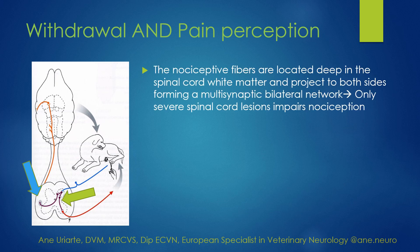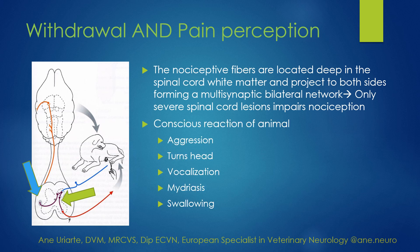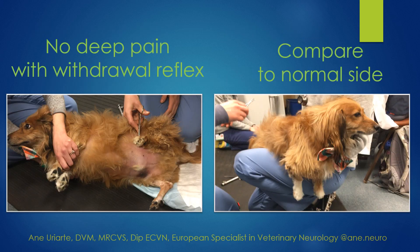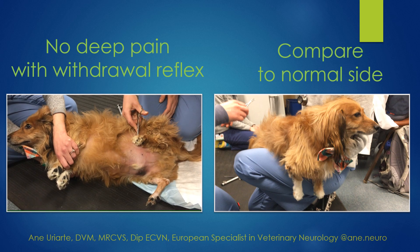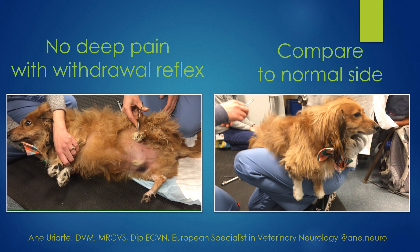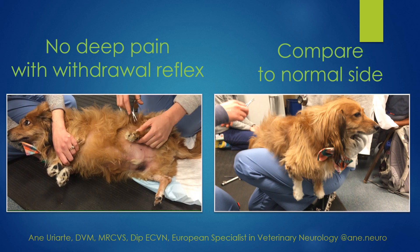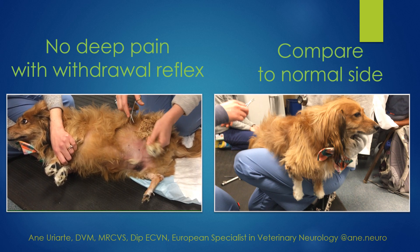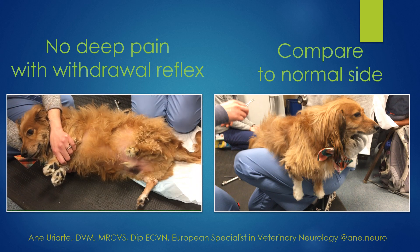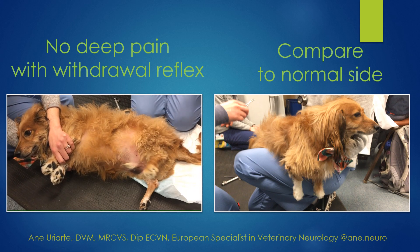The dog needs to react — needs to tell us that he has felt that. Not having nociception means there is a severe spinal cord lesion. Not having a reflex just tells us that the L4-S1 area is affected. You can see this dog on the left that has no deep pain, but we still see a withdrawal reflex. He's not reacting at all — the legs are moving, but this is just a reflex, not a voluntary response.